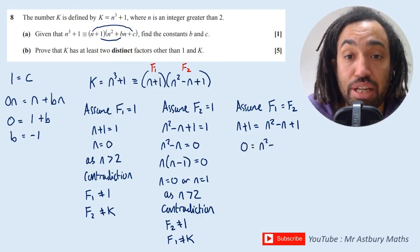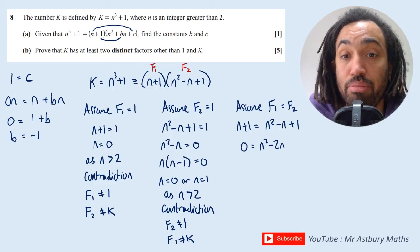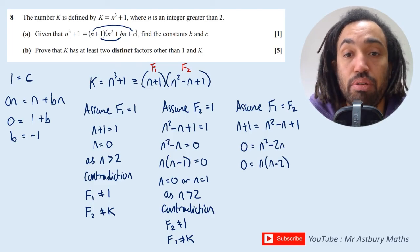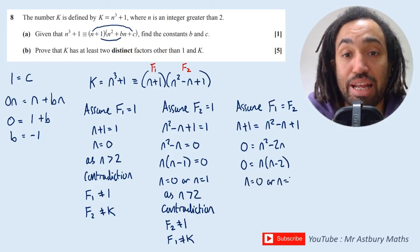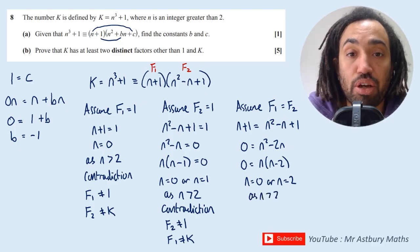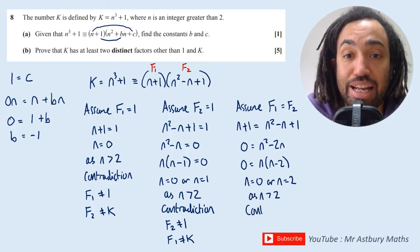So I'm going to get n + 1 = n² - n + 1, and solving that, setting it equal to 0 on the left side, gives me n² - 2n on the right side. So factorizing gives me n(n - 2), which tells me that they are only equal, these two factors, when n = 0 or n = 2. And as we know from our question n is greater than 2, this again is a contradiction.